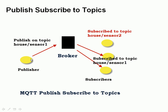They receive all messages sent by any publisher on that topic, so it doesn't have to be just one single publisher. There's another subscriber here, but he's subscribed to 'house/sensor2', not 'house/sensor1', so he won't receive any messages sent to 'house/sensor1'. He will receive messages sent to 'house/sensor2', regardless of which publisher is publishing those messages.